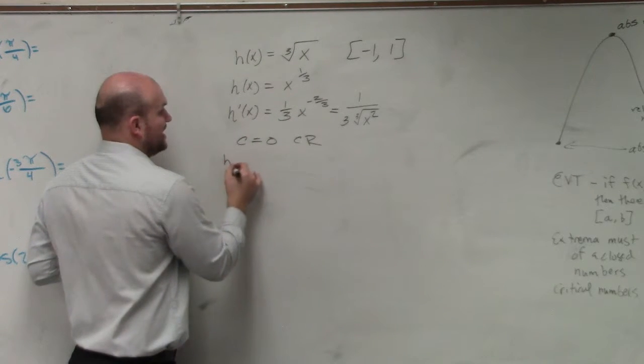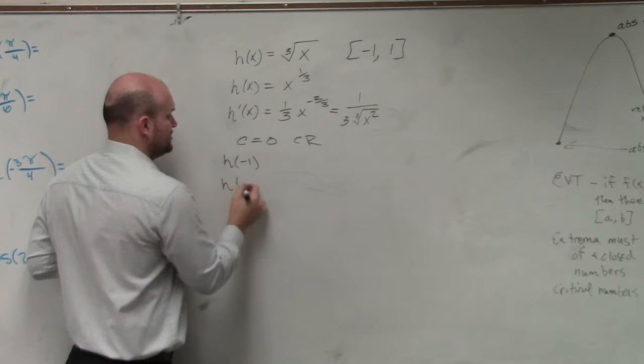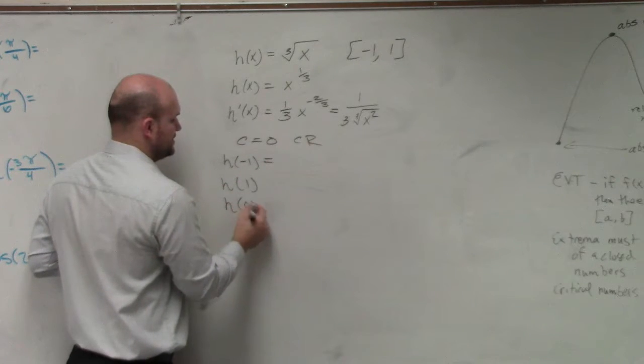And then we have our endpoints. So we'll do h of negative 1 and h of 1. We need to find h of 0, too.